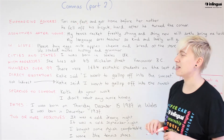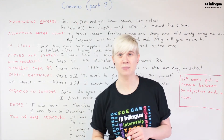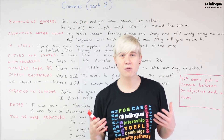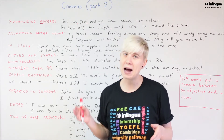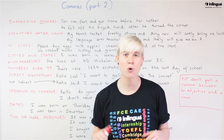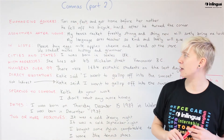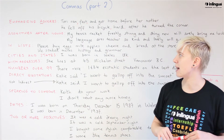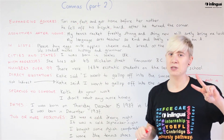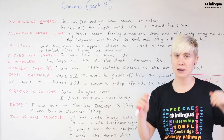'He fell off his bicycle, hard, after he turned the corner.' Those little intakes of breath give information about how to say this sentence and they make it more dramatic. So we use the comma to emphasize adverbs — and remember, you need two to emphasize an adverb, one on each side.